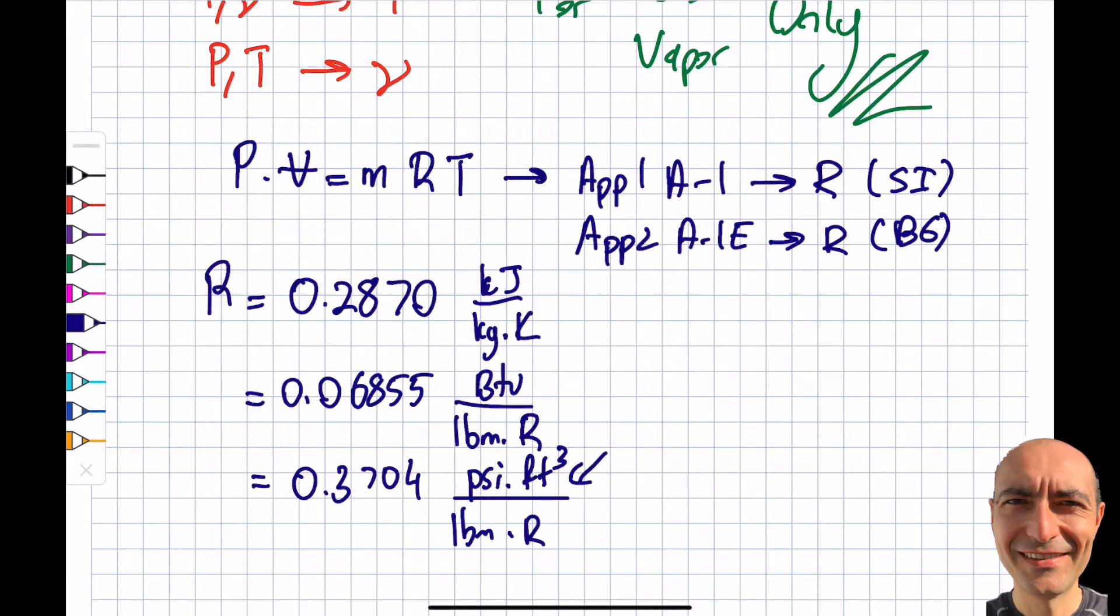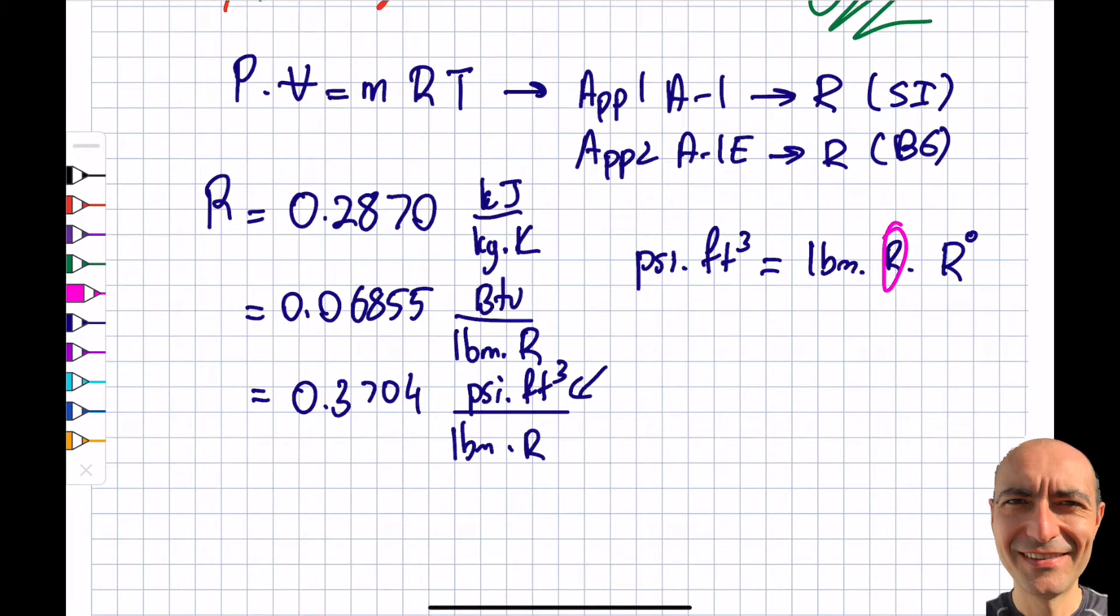You can see, let's take this one as an example in terms of dimensional homogeneity. The pressure will be in psi, the volume will be in feet cubed, the mass will be in pound mass, and you can see what the unit should be for R, and the T will be in Rankine. Be careful, this is Rankine. So you can see here where it's coming from. This is the units for that, this is for air. The rest you should refer to appendix 1 A1 or appendix 2 A1E.